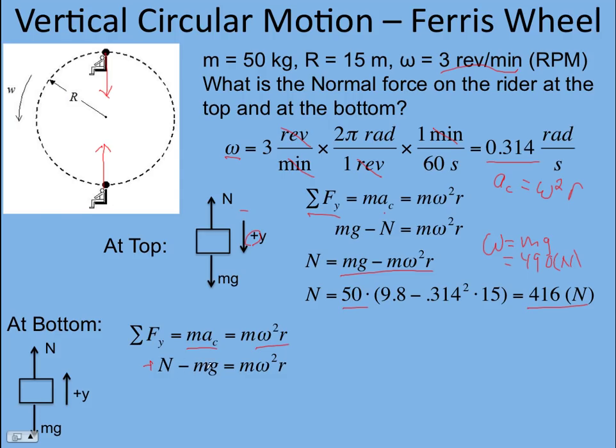So when you solve for the normal force now, it's mg plus m omega squared r, whereas over here it was minus. And so you're going to feel heavier. And so putting in your numbers and solving, you get 564 newtons. And so you can try this one out.